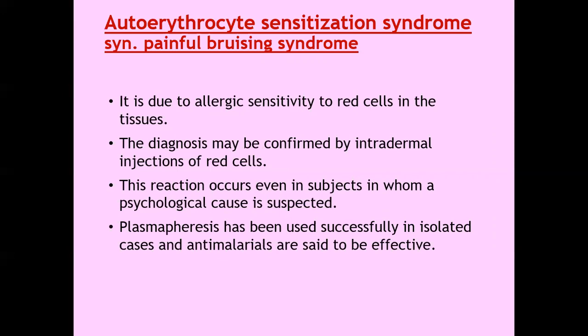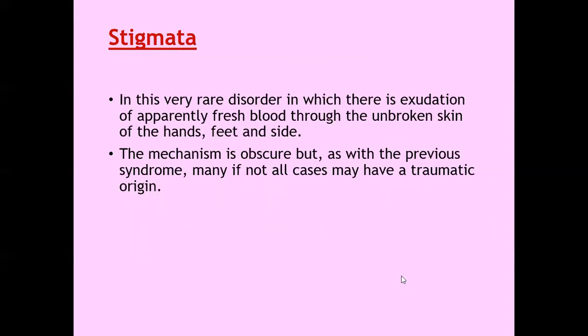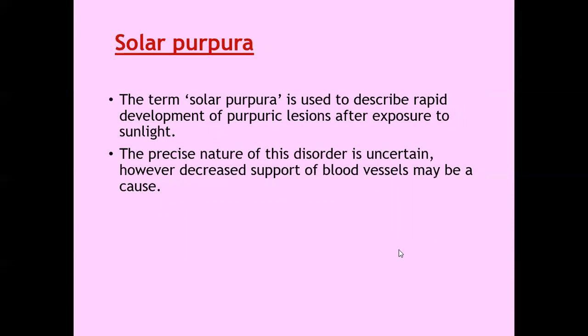Paroxysmal finger hematoma: there is a recurrent episode of painful bruising on the palm and palmar aspect of fingers, presenting as venous rupture from frictional trauma such as turning on a tap or twisting the top of a jar. Auto-erythrocyte sensitization syndrome, also known as painful bruising syndrome, is due to allergic sensitivity of red cells in the tissue. Diagnosis is confirmed by intradermal injection of red cells. Plasmapheresis has been used successfully in isolated cases and antimalarials are also found to be effective. Stigmata is a very rare disorder with exudation of apparently fresh blood through unbroken skin of hands, feet, and side. Solar purpura describes rapidly developing purpuric lesions after exposure to sunlight; decreased support of blood vessels may be a cause.